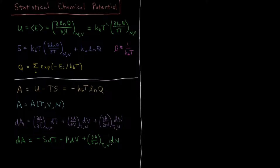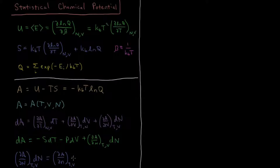If we want to talk about the number of particles or the number of moles, it's easy to translate back and forth. So (∂A/∂N) at constant T and V times dN is equal to (∂A/∂n) — number of moles — at constant T and V times dn, because the number of moles is just the number of particles divided by Avogadro's number. It's a matter of gaining and losing a factor of Avogadro's number by the chain rule, so you multiply by Avogadro's number and then divide by it.